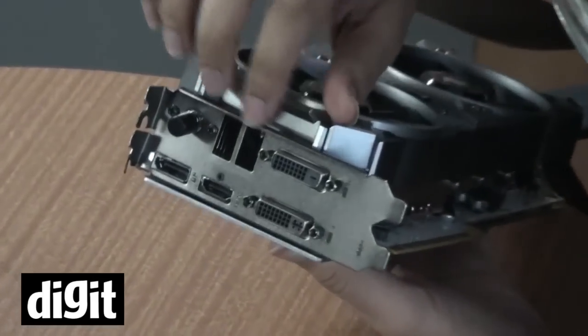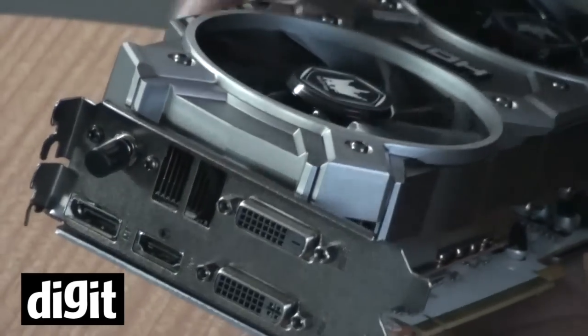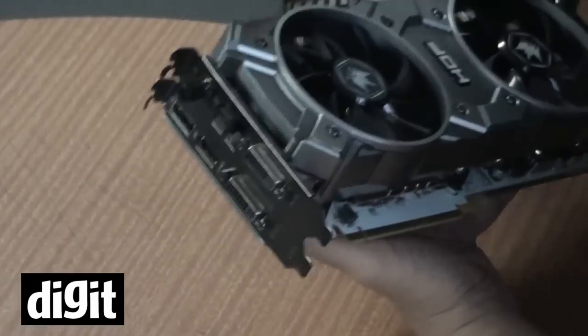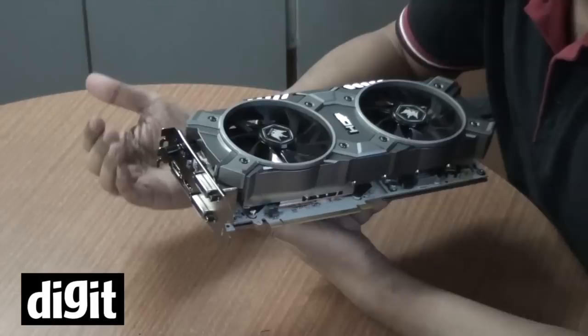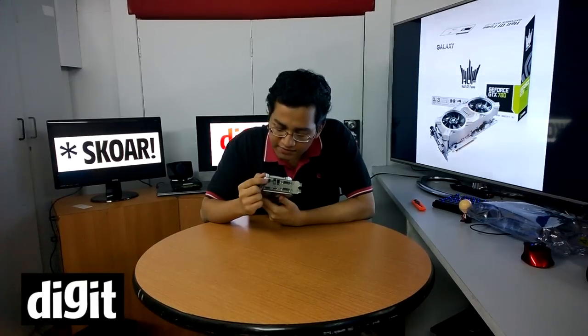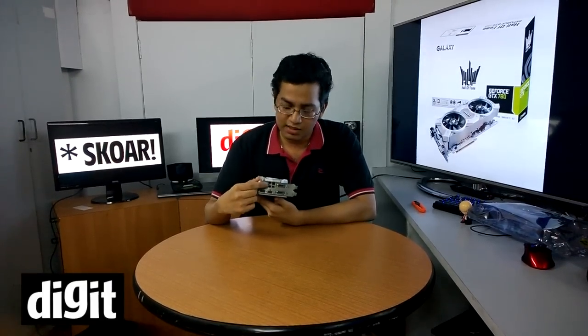The grill is slightly different over here. Normal stock cards have multiple small grooves, but in this one we see two big ones, so we have less metal obstructing the airflow overall. Another different thing that we see is this button over here.